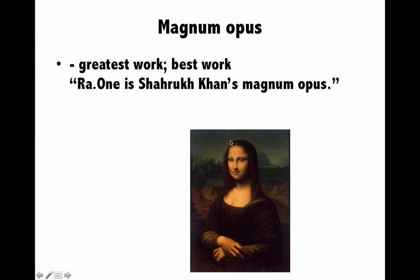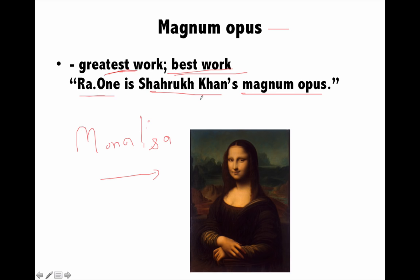Next is 'magnum opus', which means the greatest or best work of somebody, or a very large, giant work. For example, the movie Bajirao Mastani is Sanjay Leela Bhansali's magnum opus. Similarly, Krish is Hrithik Roshan's magnum opus. The painting Mona Lisa is Leonardo da Vinci's magnum opus — one of the greatest works of the famous painter.